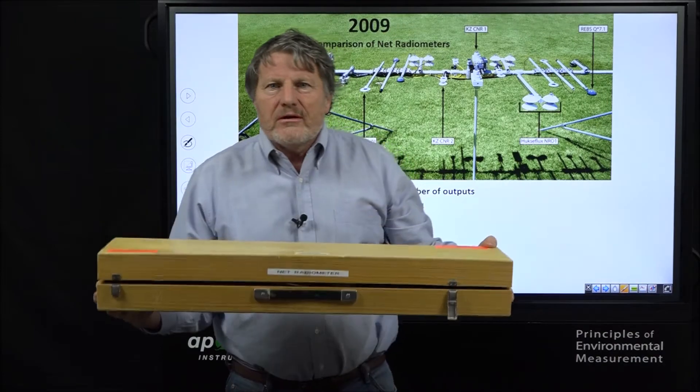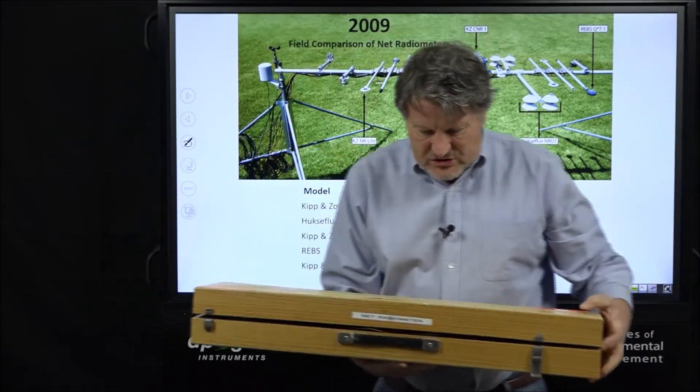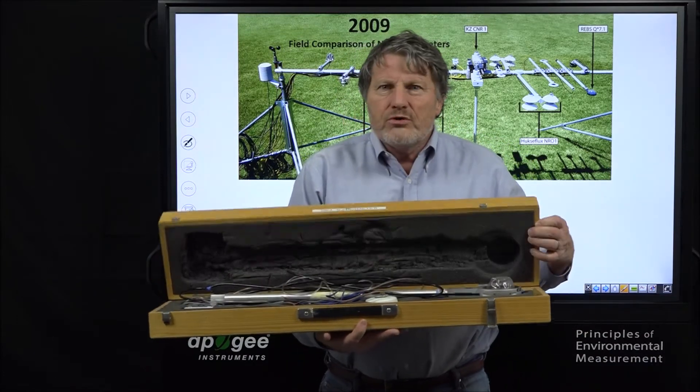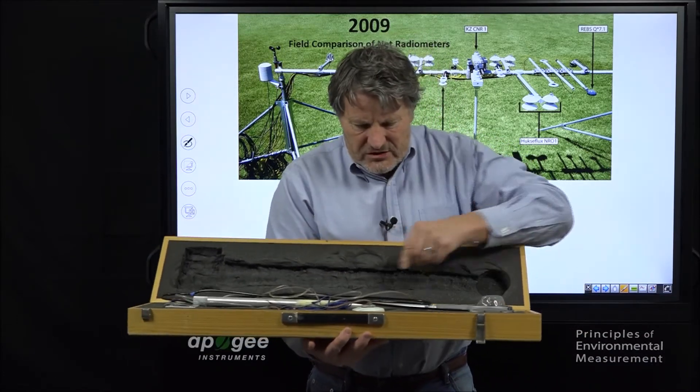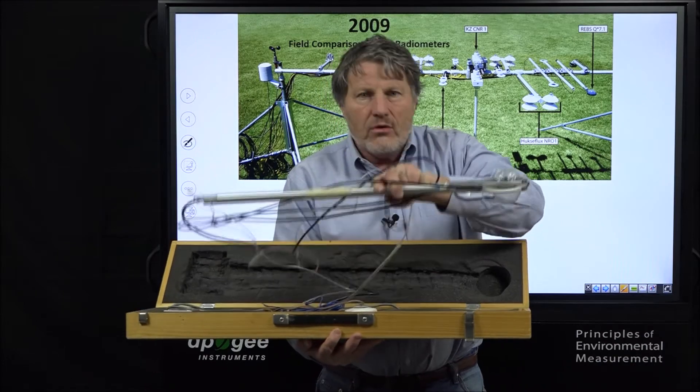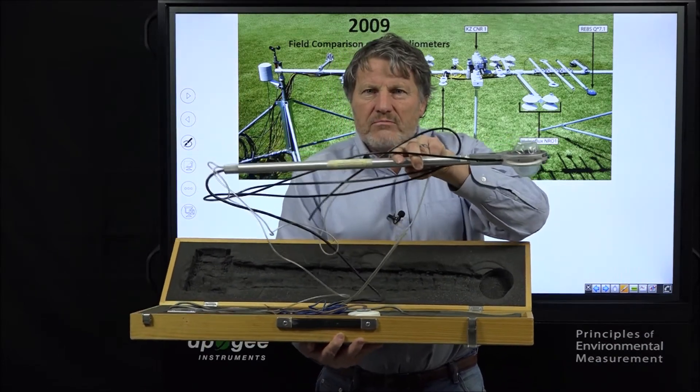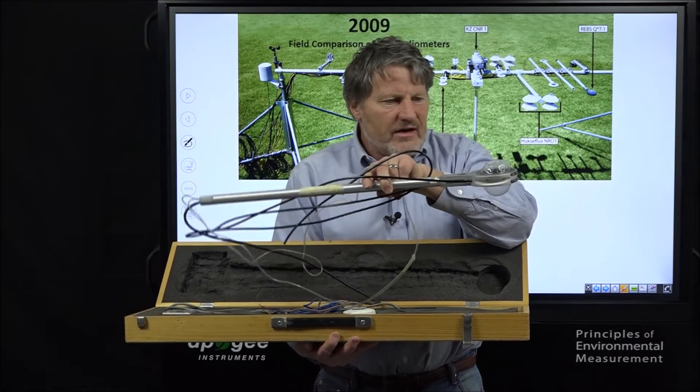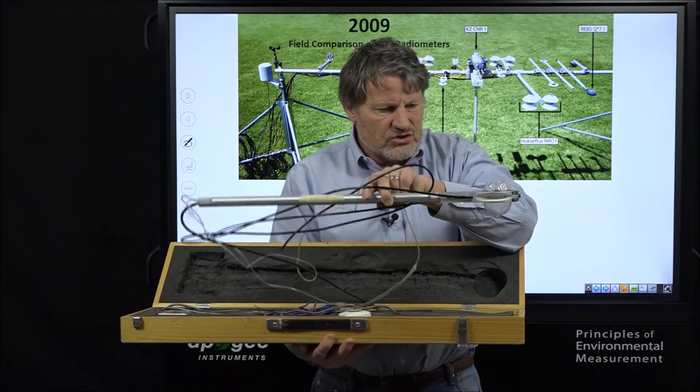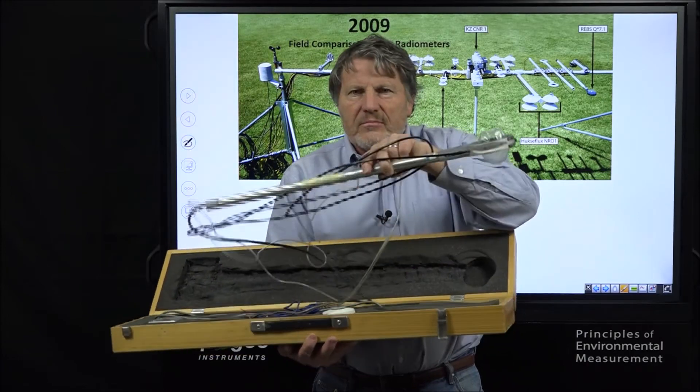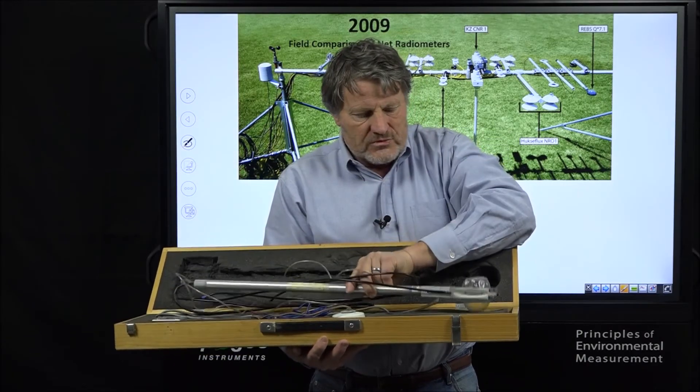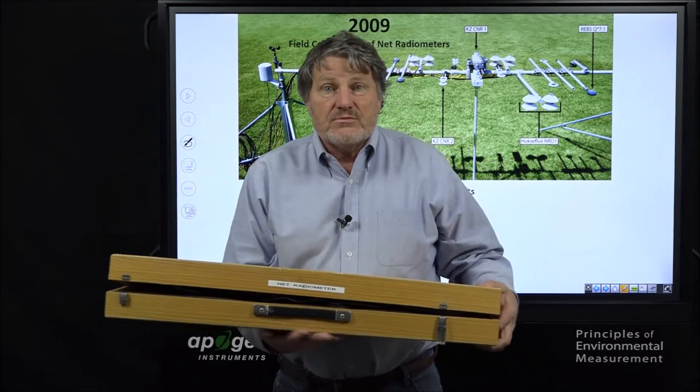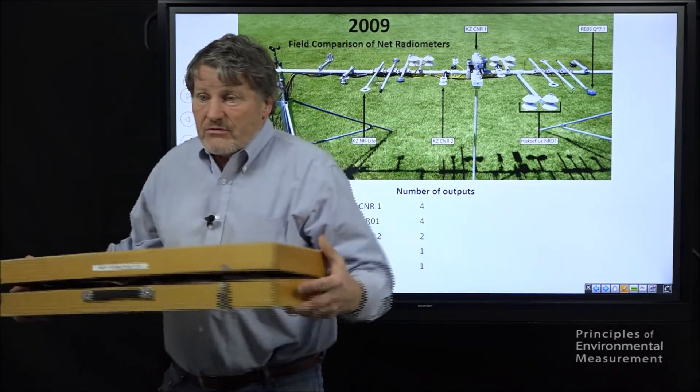This one is in our museum now. We didn't use it in the study, but instruments, precision instruments, used to come in wood boxes. And this is a Swiss Taiko net radiometer made by a Swiss company that was state-of-the-art for many years. Had to have a pump and inflate the domes, but it attempted to do short-wave and long-wave measurements. And it's a gorgeous instrument. It's since been replaced by several other instruments.